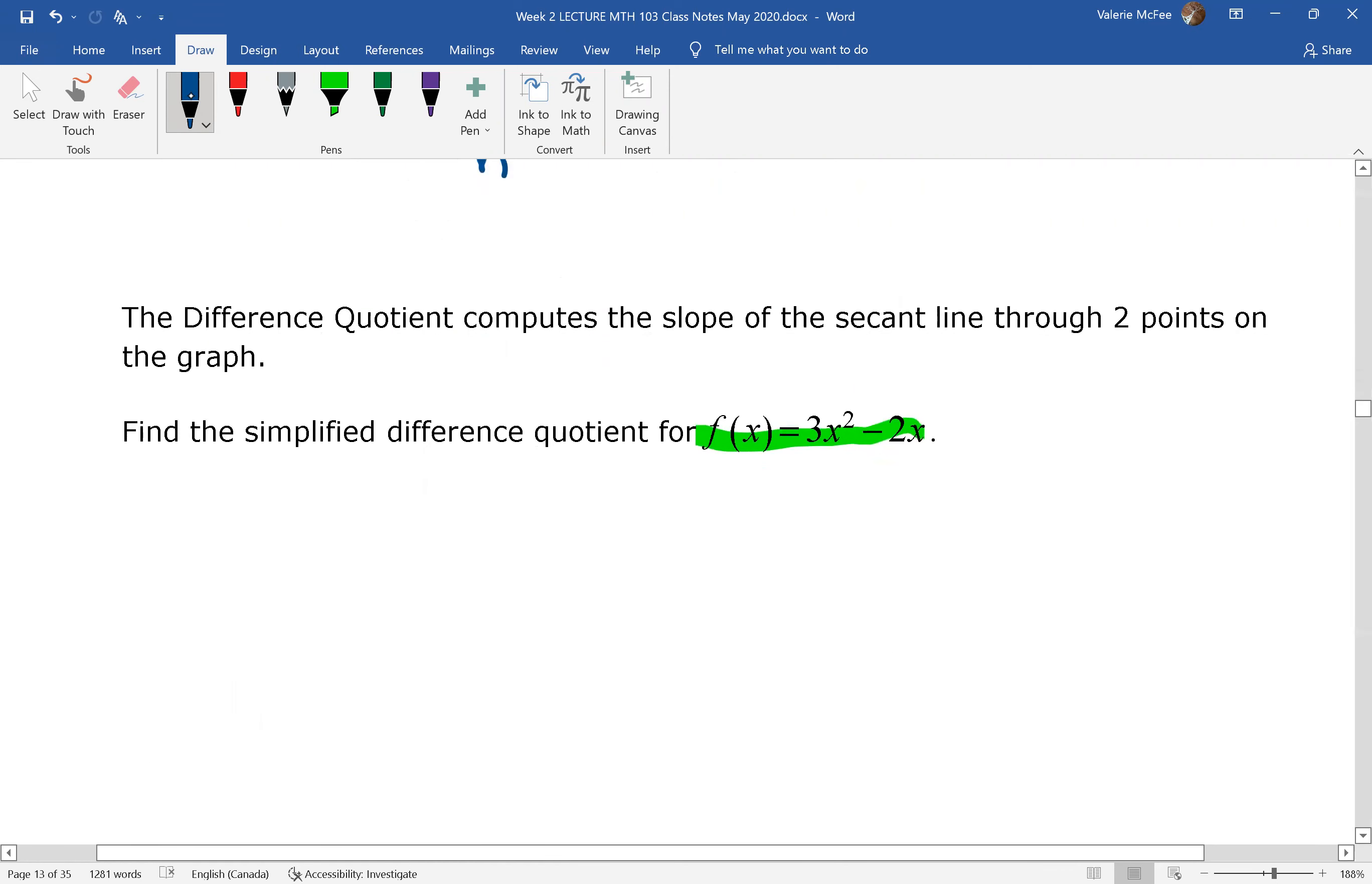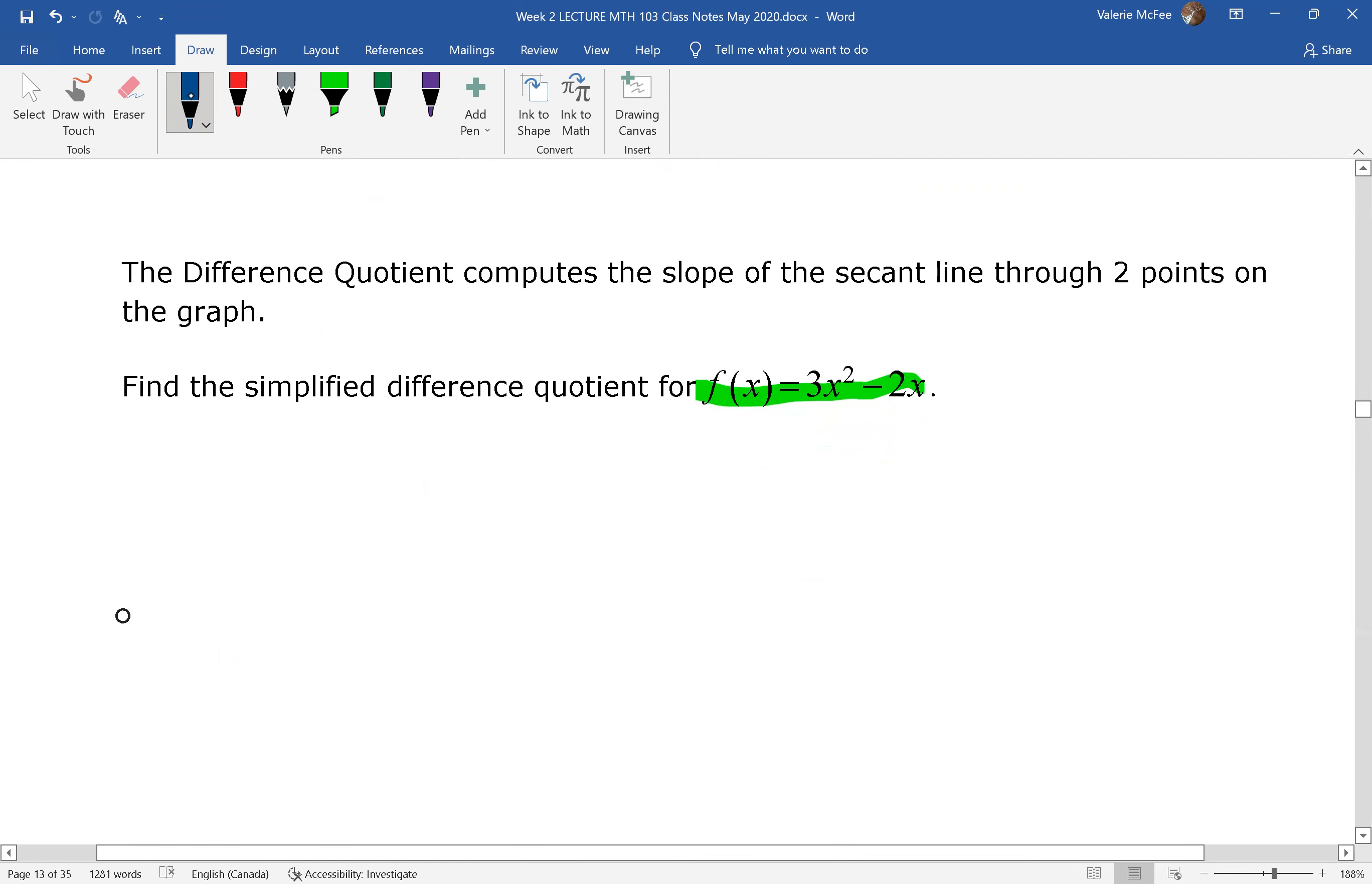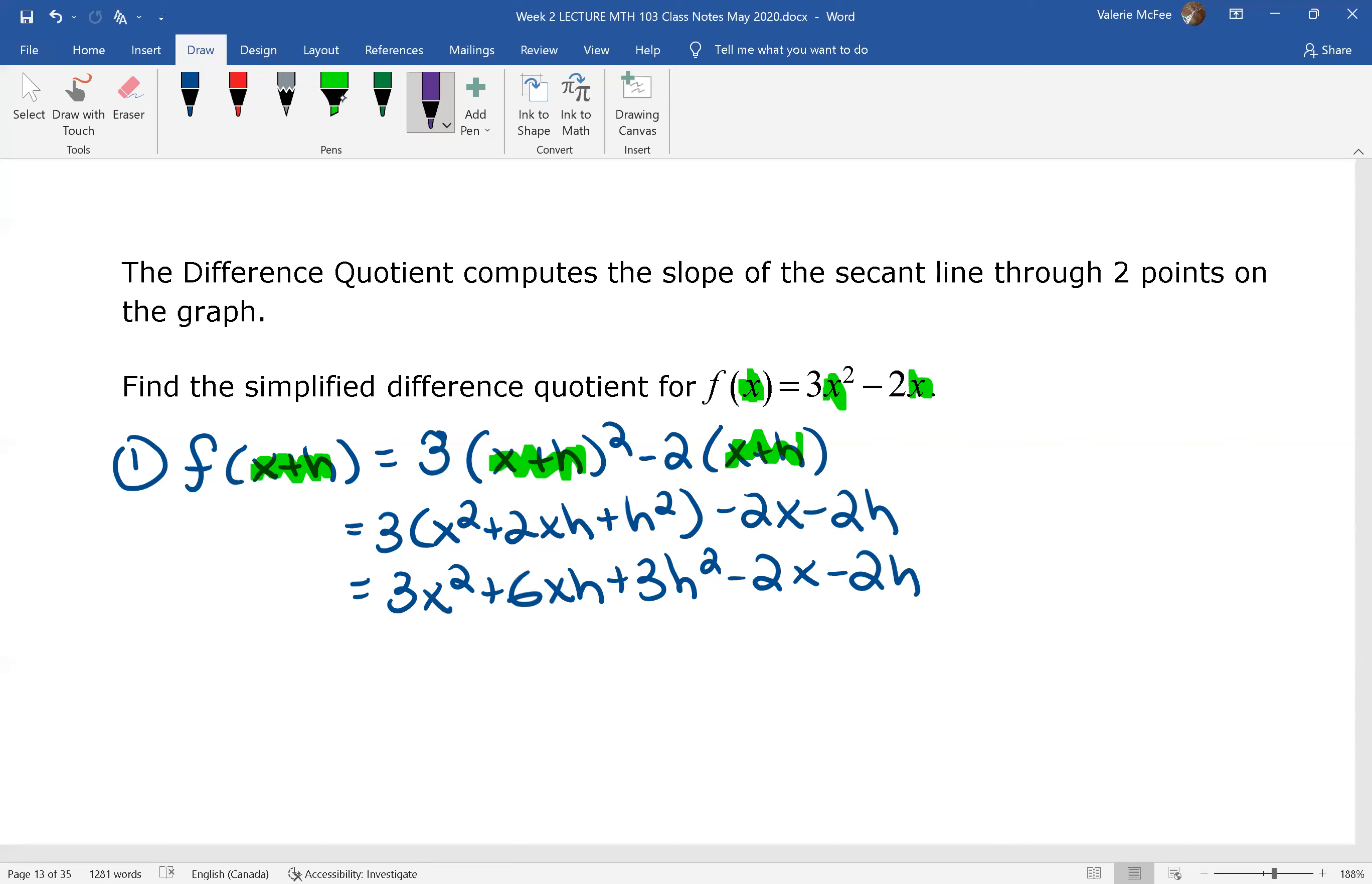So we've got this whole big formula f(x+h) minus f(x) all over h, and we want to find the simplified difference quotient for this function. I always suggest you do this in steps. First of all, let's find f(x+h). Why don't you pause your video and do that? Check your substitution. This x changed to x plus h. So each of these x's had to change to x plus h. So we've found f(x+h). I hope you squared that binomial correctly.